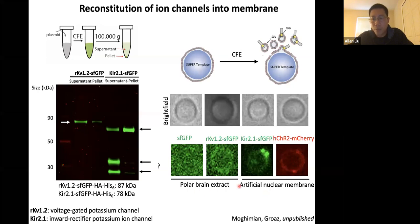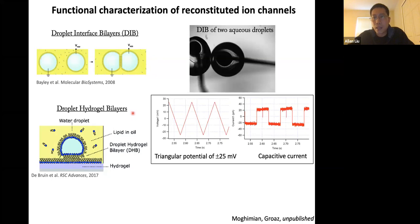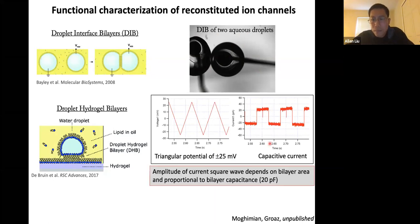We are characterizing the function of these channels using a droplet interface bilayer (DIB) platform — two aqueous droplets in oil that form a bilayer at their interface — enabling electrophysiology to test ion channel function. Similarly, a droplet hydrogel bilayer is the same concept but easier to probe as everything is in-plane. We've succeeded in making a droplet interface bilayer between two aqueous droplets with dissolved phospholipids. Passing a triangular potential of ±25 mV, we measure a capacitive current matching expected bilayer capacitance of roughly 20 picofarads.